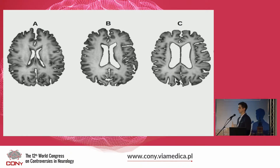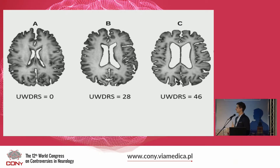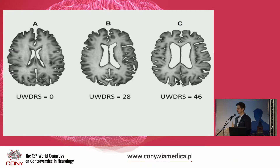As an example, consider how these three patients do neurologically. We assessed neurological impairment on the Unified Wilson's Disease Rating Scale, on which higher scores indicate greater impairment. Patient A with a normal brain has a score of zero — asymptomatic. Patient B with moderate brain atrophy has a score of 28, indicating moderate impairment. Patient C has a score of 46, indicating severe impairment. The pattern is clear: the greater the brain atrophy, the more severe the neurological impairment.